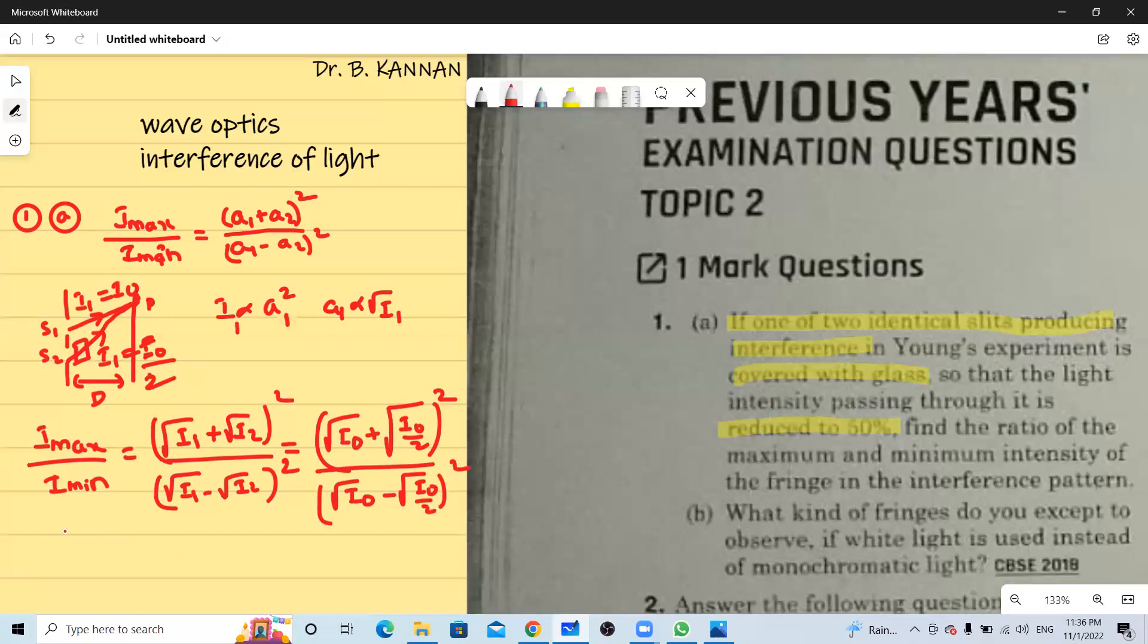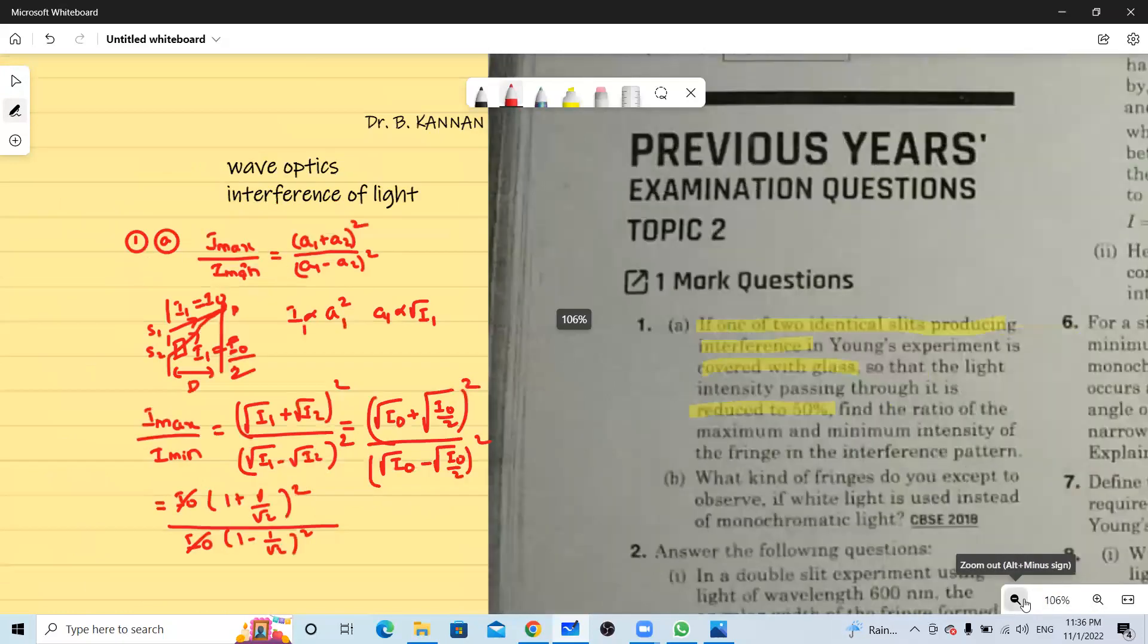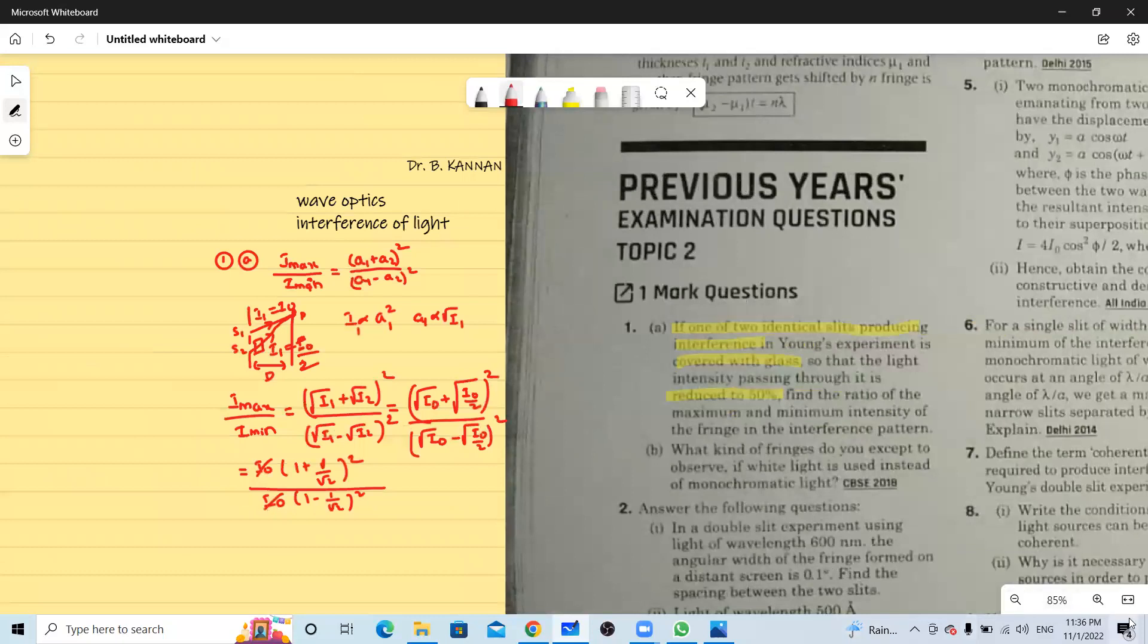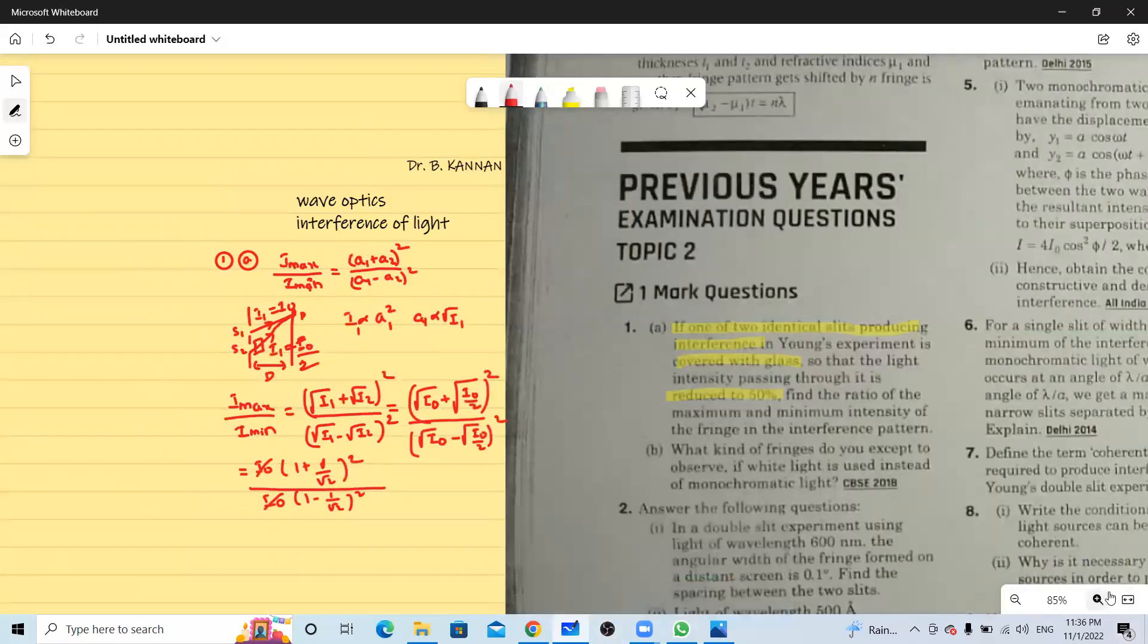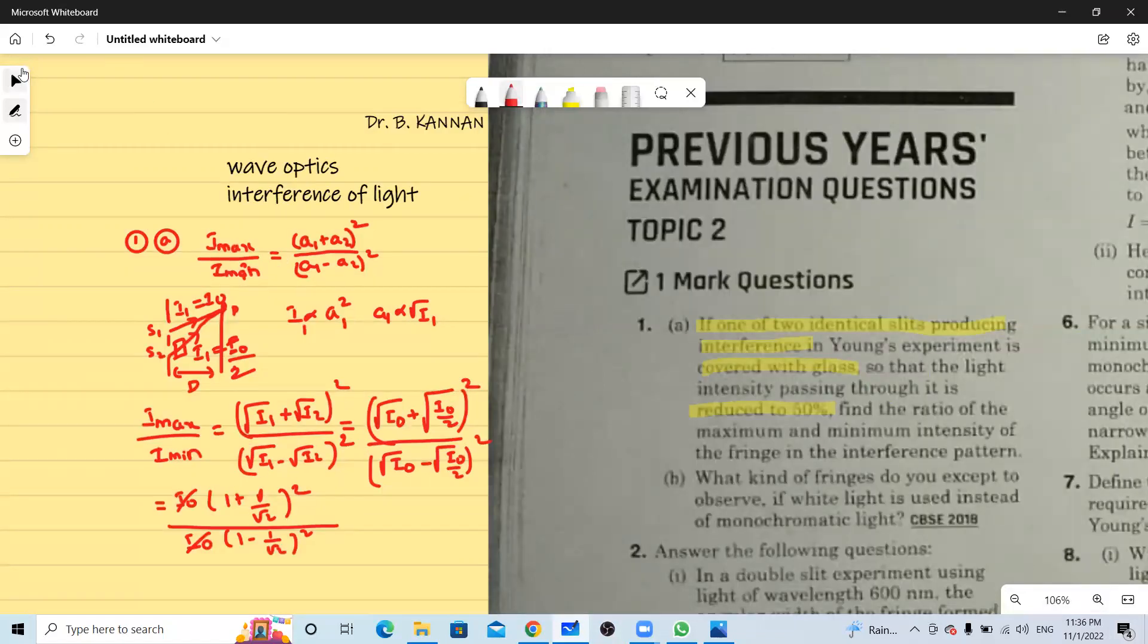So now we can take this root I naught outside. So it will become I naught 1 plus 1 by root 2 in the numerator and in the denominator I naught 1 minus 1 by root 2 the whole square. This I naught and this I naught is cancelled and then we have to take LCM for this.